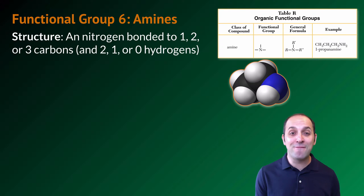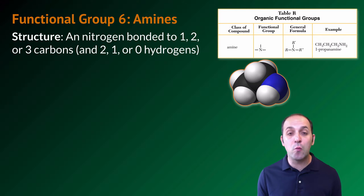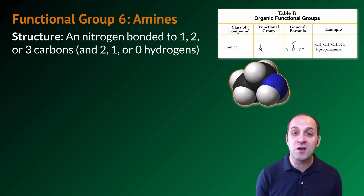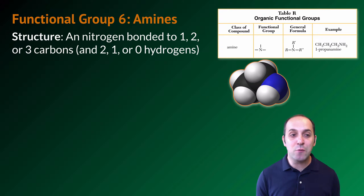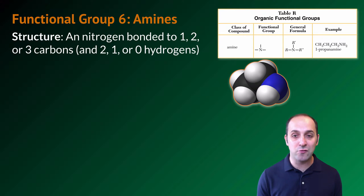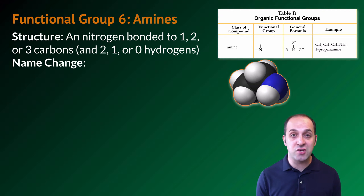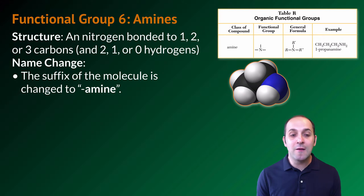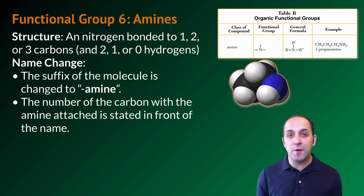As a reminder, we've already talked about five different examples of functional groups, and we've been using reference table R, which shows us the functional groups we need to be aware of for this course. Functional group number six, our first nitrogen-containing functional group, are the amines. In an amine, we have a nitrogen that's bonded to one, two, or three carbons, and as a result, is additionally bonded to two, one, or zero hydrogens. The name change for amines is to take the suffix of the molecule and add 'amine' to it. The number of the carbon with the amine attached is stated in front of the name if there's more than one place where we could put that amine in the molecule.